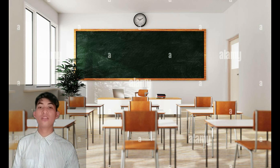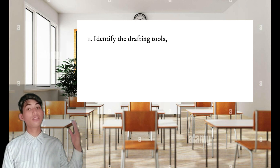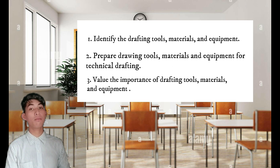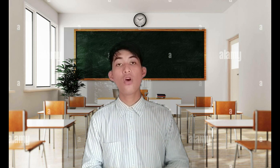Our next lesson is all about the drafting tools, materials, and equipment. Before we go through our formal discussion, let us first read the objectives of the lesson. At the end of the lesson, students should be able to: first, identify the drafting tools, materials, and equipment; second, prepare drawing tools, materials, and equipment for Technical Drafting; and third, value the importance of drafting tools, materials, and equipment. Who has an idea about the materials and tools being used in Technical Drafting?